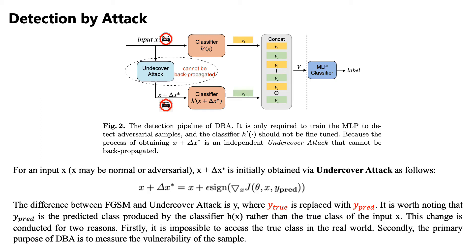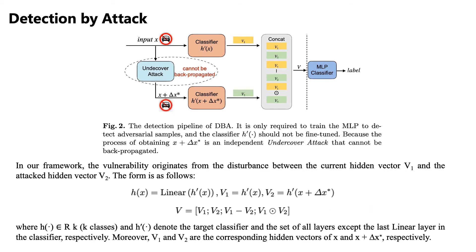This change is made for two reasons. Firstly, it is impossible to access the true class in the real world. Secondly, the primary purpose of DBA is to measure the vulnerability of the sample. In our framework, the vulnerability originates from the disturbance between the current hidden vector V_1 and the attacked hidden vector V_2. The vector V is obtained to capture more information between V_1 and V_2 by referring to ESIM, and a simple MLP is trained to classify the input X as adversarial or normal.